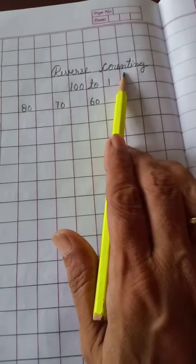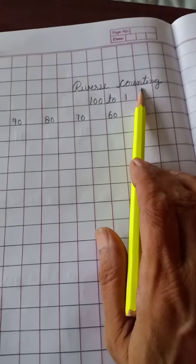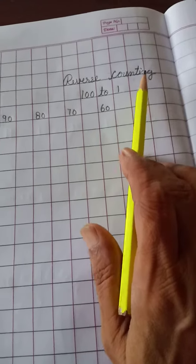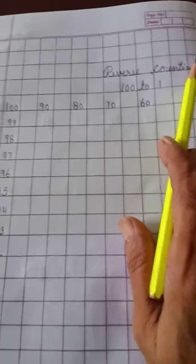Reverse counting. What is this? Reverse counting. Previous, I will teach you simple counting 1 to 200, right? So this is reverse counting. So let's start reverse counting.